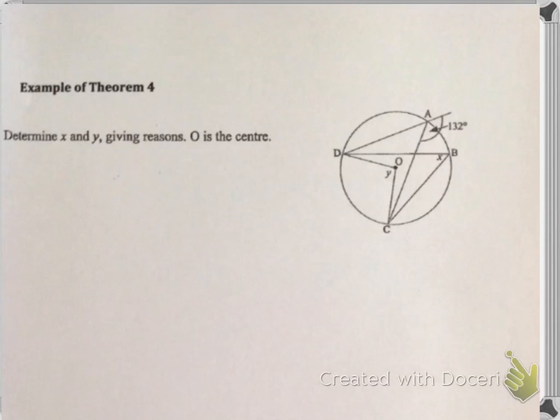Let's practice an example. This example says determine the values of x and y giving reasons, where O is the centre of the circle. Well, the first thing I saw was this idea of butterfly angles. Butterfly angles mean that the two angles at the circumference are equal. So I can already know that angle A at the circumference is the same as x. Which means if I can find angle A, I know what x is.